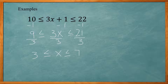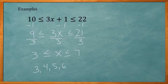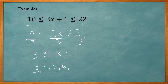So what values does that encompass? X is greater than or equal to 3 and less than or equal to 7, which includes 3, 4, 5, 6, and 7. Now let's try a few example ACT problems.